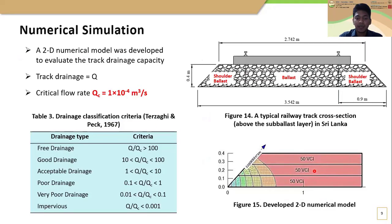After investigating the permeability behavior of fouled ballast, a 2D numerical model was developed using GEO-Studio software to evaluate the track drainage capacity. In order to classify the track drainage, a drainage classification criteria was used as given in this table. The criteria is based on the ratio between the track drainage and critical flow rate. According to that, the drainage types vary from free-drainage to impervious condition. Based on the criteria, if the Q over Qc value is less than 1, it is strongly recommended to carry out ballast cleaning work. In this study, a critical flow rate of 10⁻⁴ m³ per second was used by considering the rainfall data. When you consider a typical cross section of a railway track, it is symmetric about the middle vertical axis, therefore only a half track was considered for numerical seepage analysis.